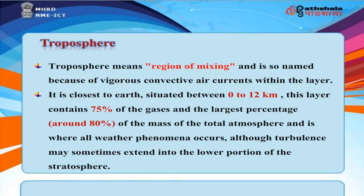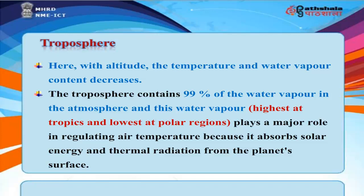Troposphere means 'region of mixing' and is named for its vigorous convective air currents. It is the layer closest to Earth, situated between 0 to 12 kilometers, containing 75% of the gases and around 80% of the mass of the total atmosphere, and is where all weather phenomena occur. Temperature and water vapor content decrease with altitude. The troposphere contains 99% of atmospheric water vapor — highest at the tropics and lowest at polar regions — which plays a major role in regulating air temperature by absorbing solar energy and thermal radiation from the planet's surface.